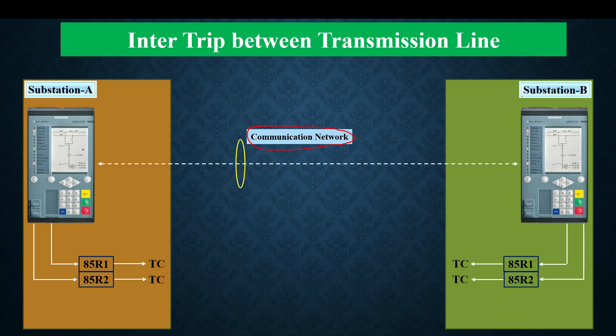If a delayed protection operates — for example distance protection zone 2, zone 3, or zone 4 — it is a delayed tripping case. The delayed trip inter trip signal will go to substation B and operate 85R2. Both 85R1 and 85R2 will trip the circuit breaker, but the difference is 85R1 is a self-reset relay that initiates the auto-recloser, whereas 85R2 is a lockout relay that blocks the auto-recloser.